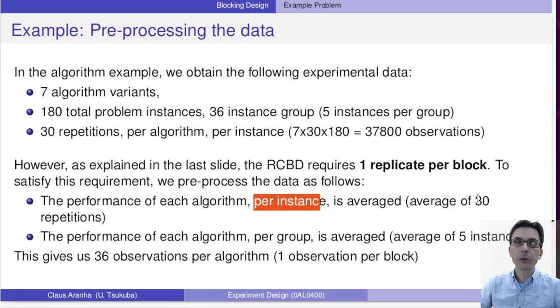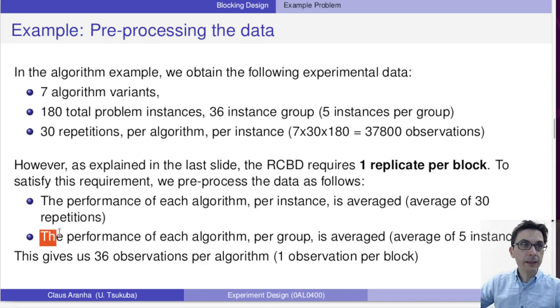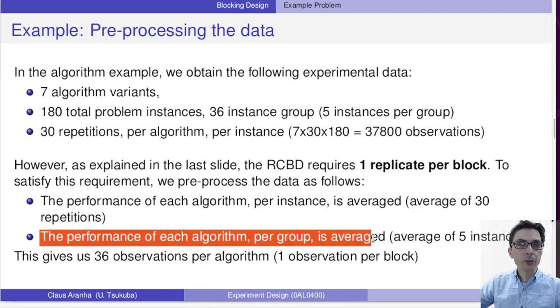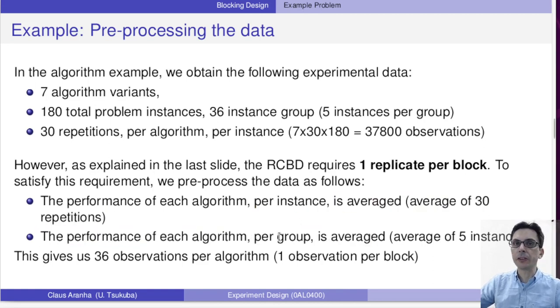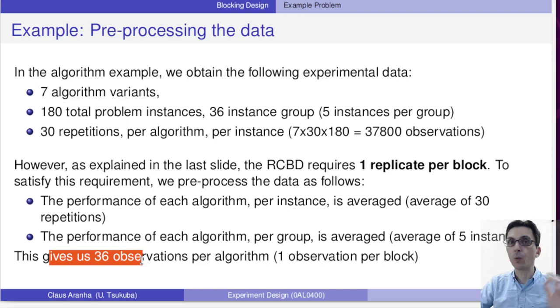For each pair of algorithm and problem, we have one data point which is the average of the thirty runs. Then the performance of each algorithm per group is also averaged. For each group, we take the performance of the algorithm in the five problems that compose that group and we take that average. This gives us a total of 36 observations per algorithm, one observation per block.